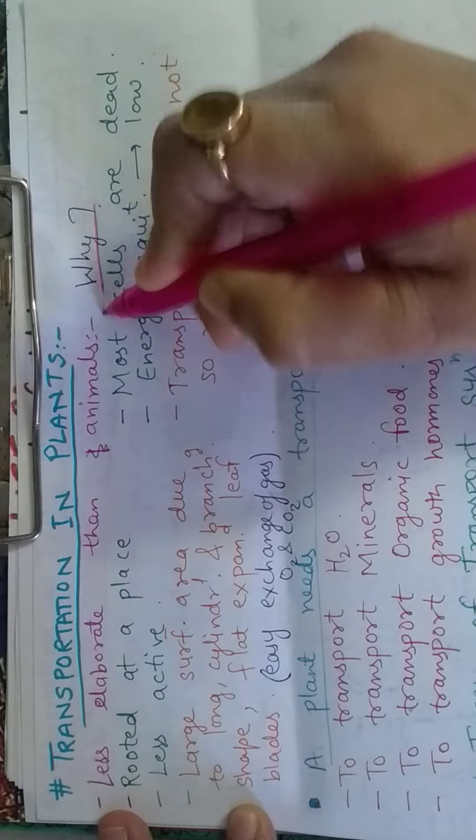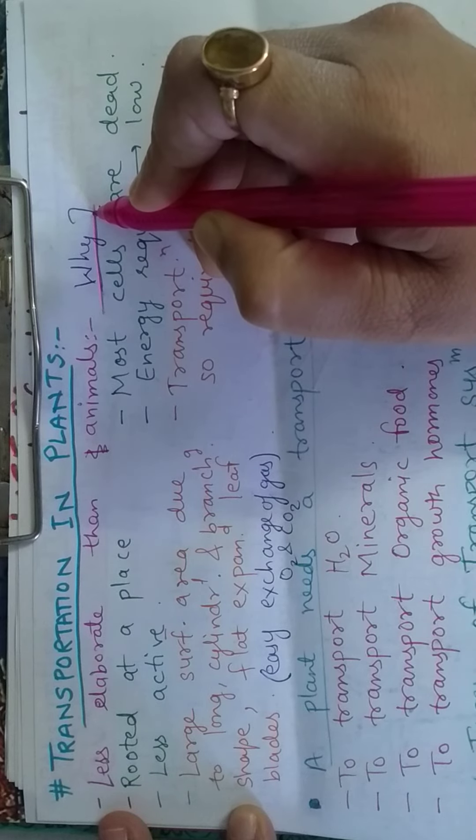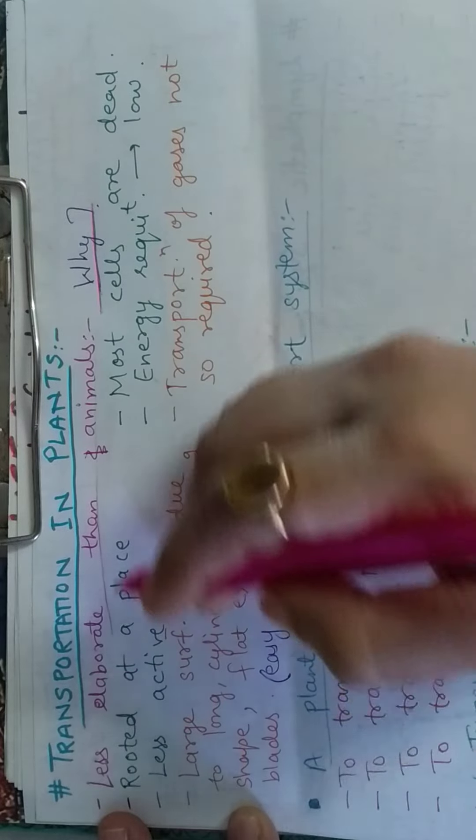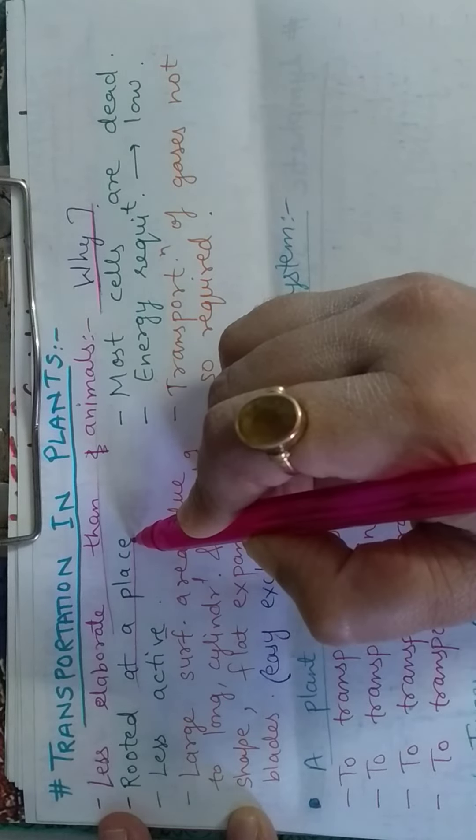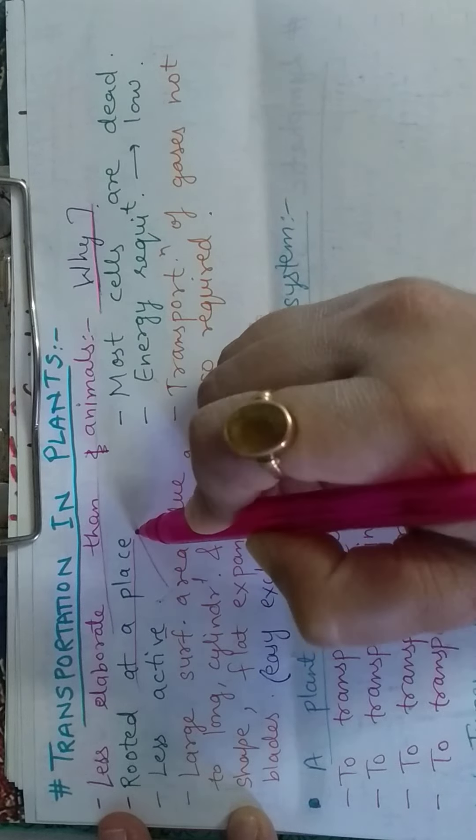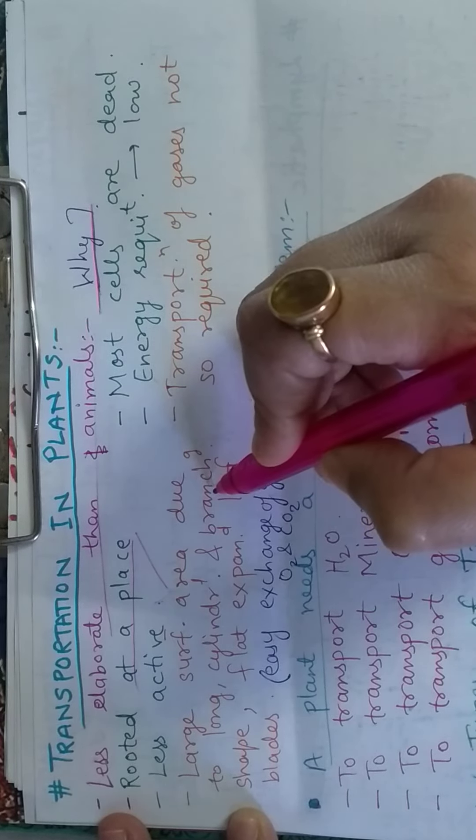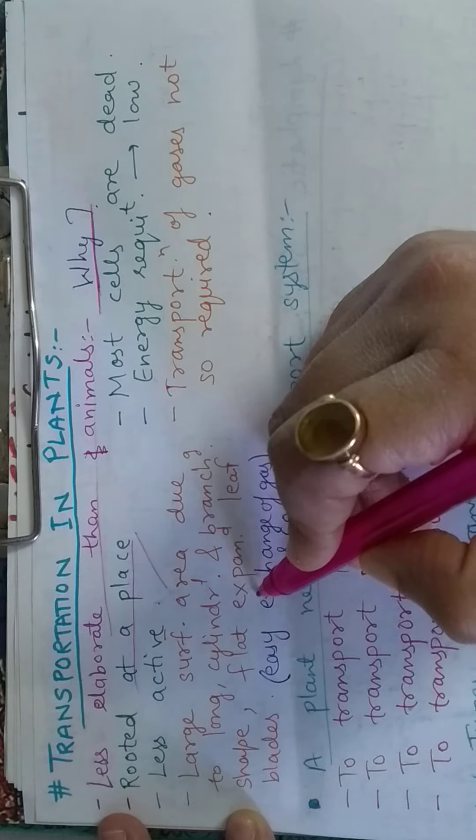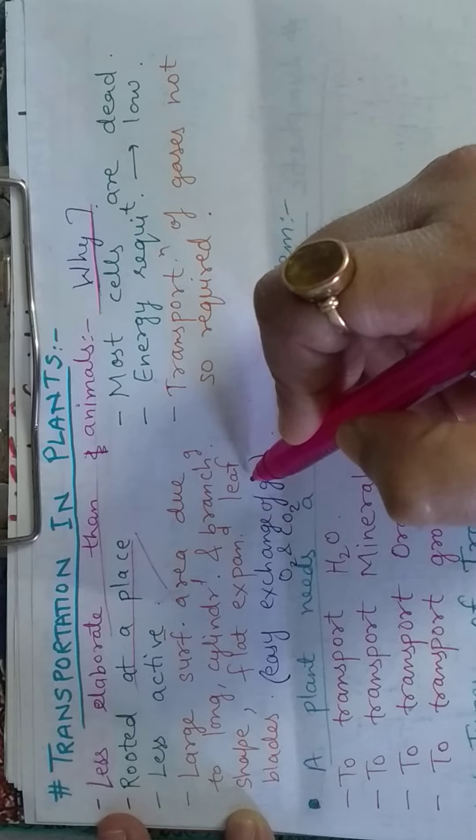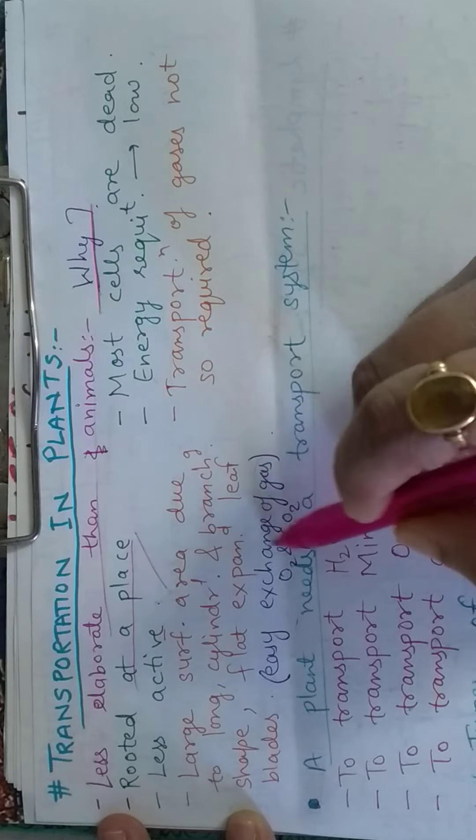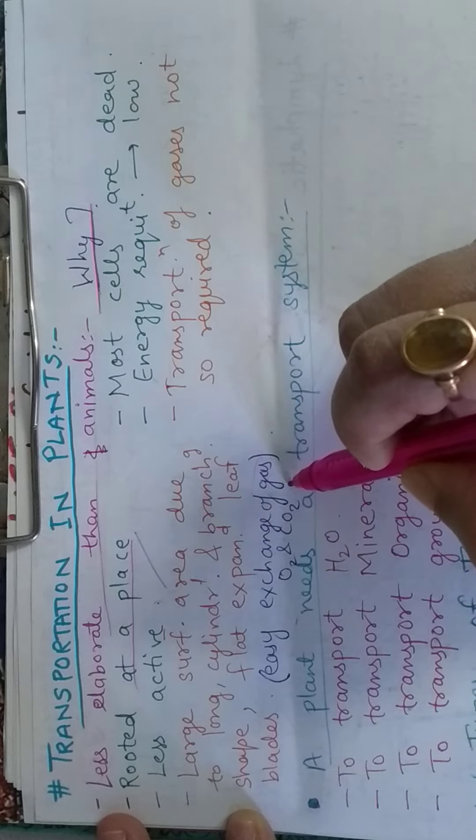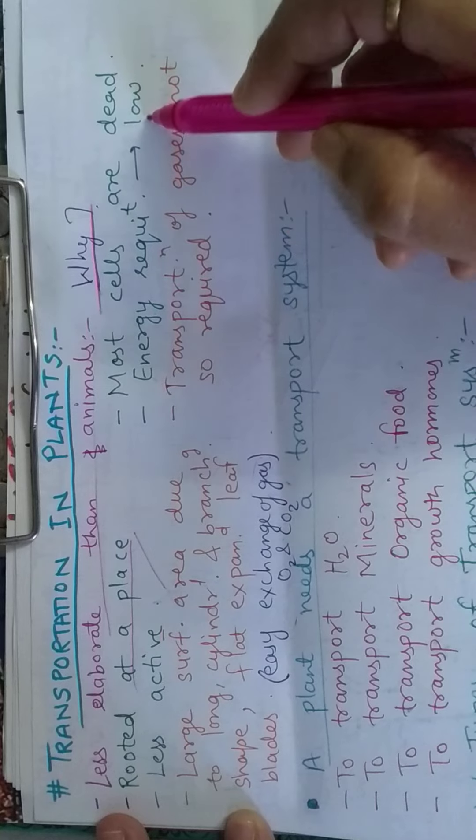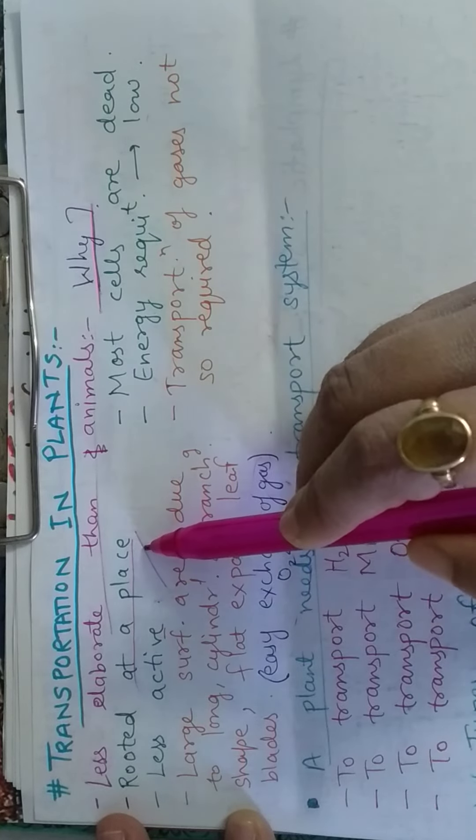A question will arise: why are plants less elaborate than animals? The answer is because they are rooted at a place, they can't move, so they are less active and they have large surface area due to long cylindrical branching shape and flat expanding leaf blades which easily exchange gases like oxygen and carbon dioxide. Most of their cells are dead, their energy requirement is low because they are less active and rooted at a place.